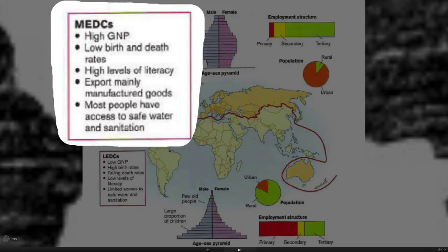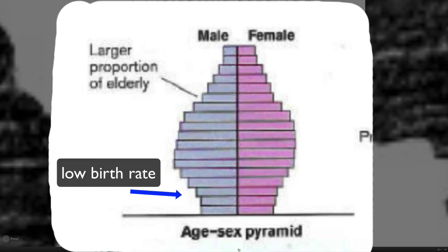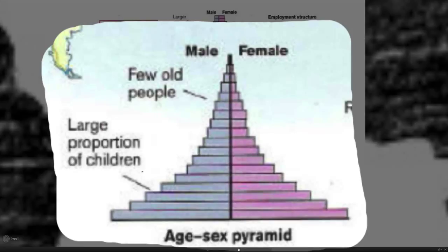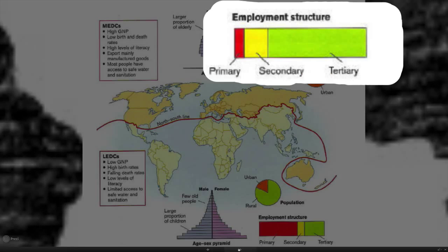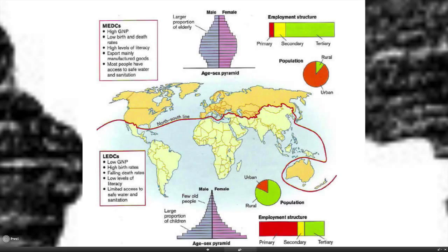In more economically developed countries you have a high gross national product and low birth and death rates. You can see this in the age-sex pyramid — in the northern, more developed countries you have lots of older people living to a healthy old age with their pensions hopefully protected, and a low birth rate. Whereas in less economically developed countries there's a really large proportion of children and, due to a high death rate, only a few old people. This plays out in education: in the north most people are employed in the tertiary sector, whereas in the poorer south most are in primary employment, which isn't well paid.